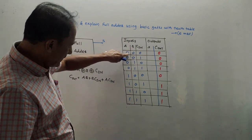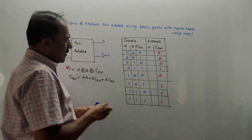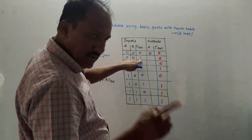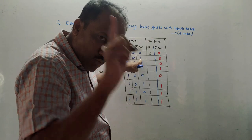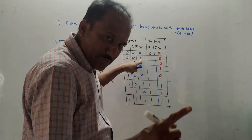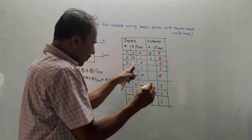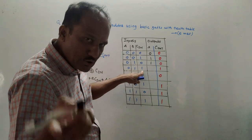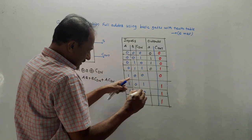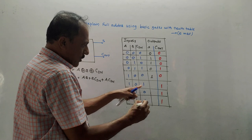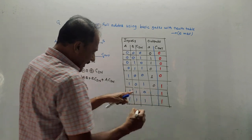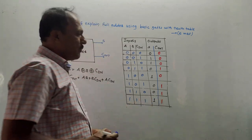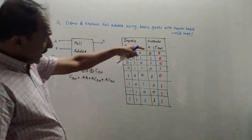Continuing the sum column: for 0-1-1, two 1s (even), S=0. For 1-0-0, one 1 (odd), S=1. For 1-0-1, two 1s (even), S=0. For 1-1-0, two 1s (even), S=0. For 1-1-1, three 1s (odd), S=1. This is how you generate the sum column of the full adder truth table.